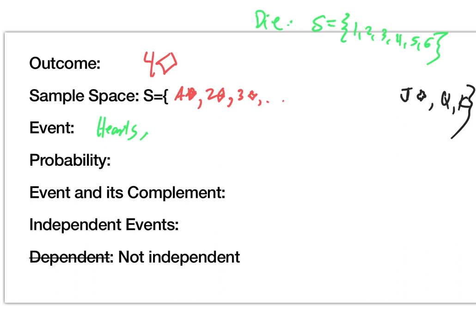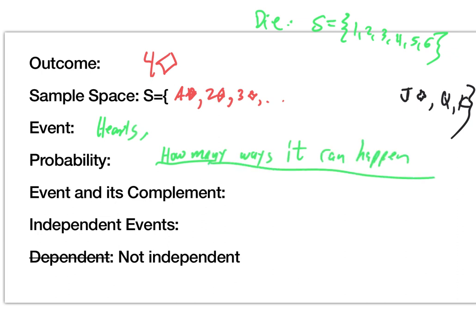Probability, which we've already determined, is the likelihood of something happening — that's your most basic definition. Numerically, it's how many ways can it happen? That 'it' refers to whatever the event is. How many ways can that happen? That's my numerator. The denominator is all possible ways — what's the total number of ways that anything could happen at all? When drawing a card from a deck, there are 52 possible ways — that was my denominator.